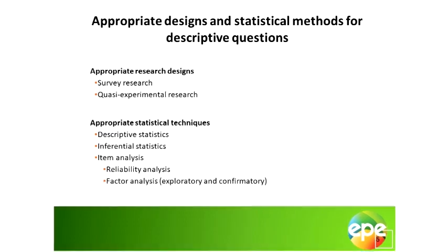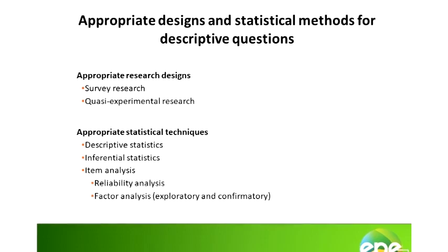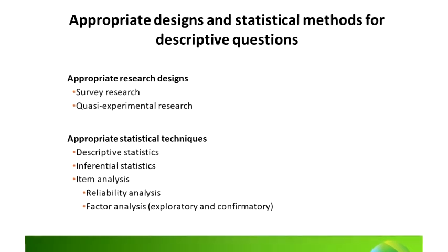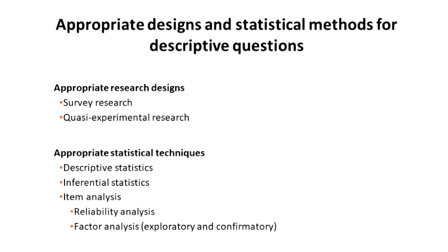If you have a research question that is descriptive in nature — meaning you would like to answer questions related to describing differences or describing relationships, what do they look like — then the most appropriate research designs include survey research and quasi-experimental research designs. Survey research focuses on using standardized questions administered to a large group of employees or individuals.